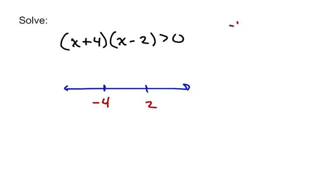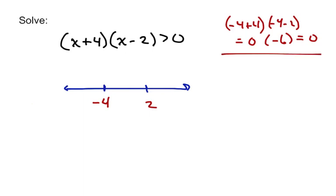That's because if we plug negative 4 in, we'll have negative 4 plus 4 times negative 4 minus 2. Negative 4 plus 4 is 0, negative 4 minus 2 is negative 6, and this whole thing equals 0. And it's the same thing when we plug in 2: 2 plus 4 is 6, and 2 minus 2 is 0, so our expression equals 0. That's how we identify our critical values — they're the ones that make the expression equal to 0.